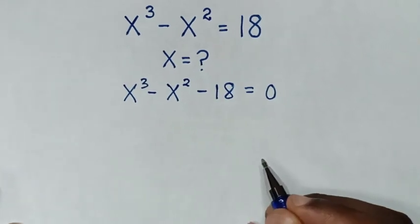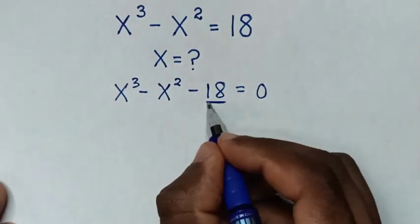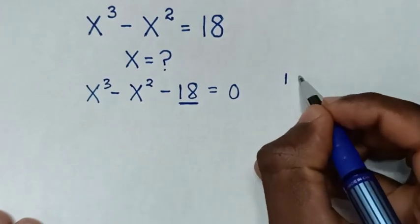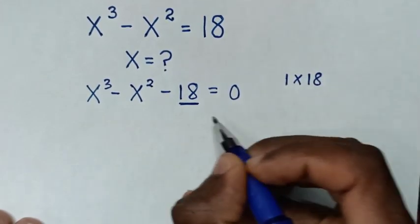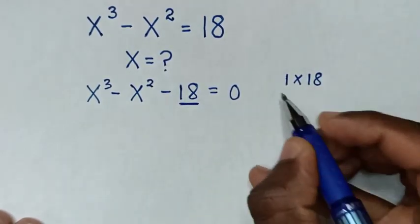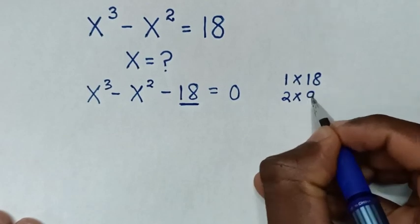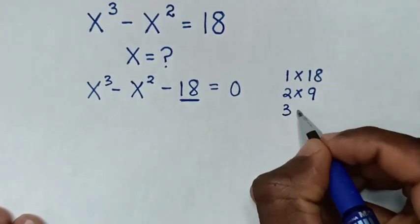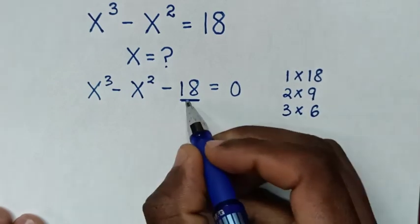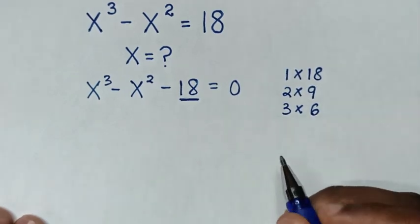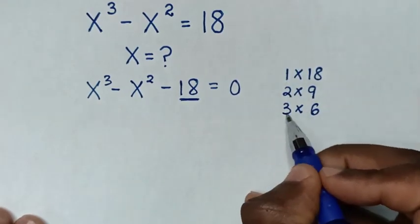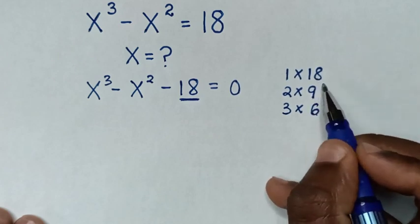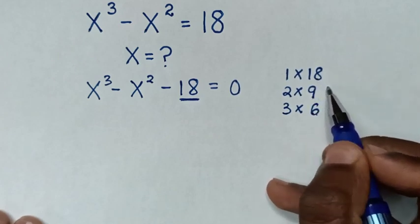Then in the next step, from this 18 we find the factors of 18, which is 1 times 18, 2 times 9, and 3 times 6. Therefore the factors are 1, 2, 3, 6, 9, and 18.